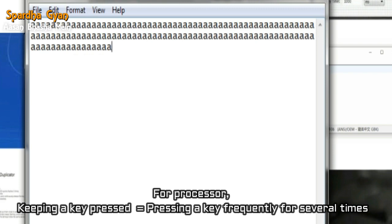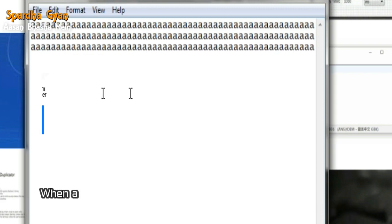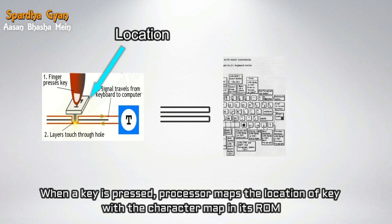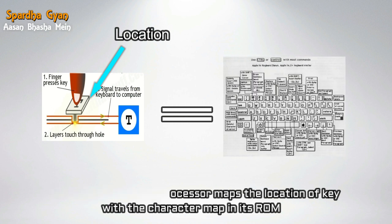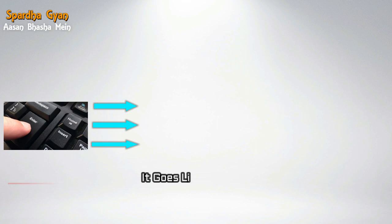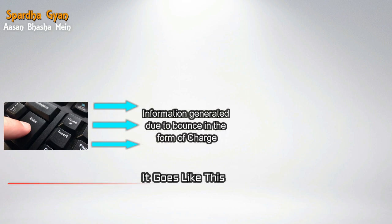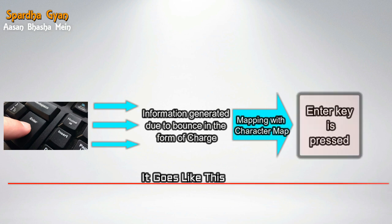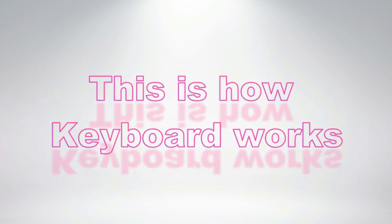When the processor knows that a circuit is closed, the key of that location matches the character map in its ROM. The character map is a comparison chart. The current flow and charge flow based on the character map information allow the processor to identify which key has been pressed and the combination of the key. This way, the output is generated. So, the keyboard works in this way.